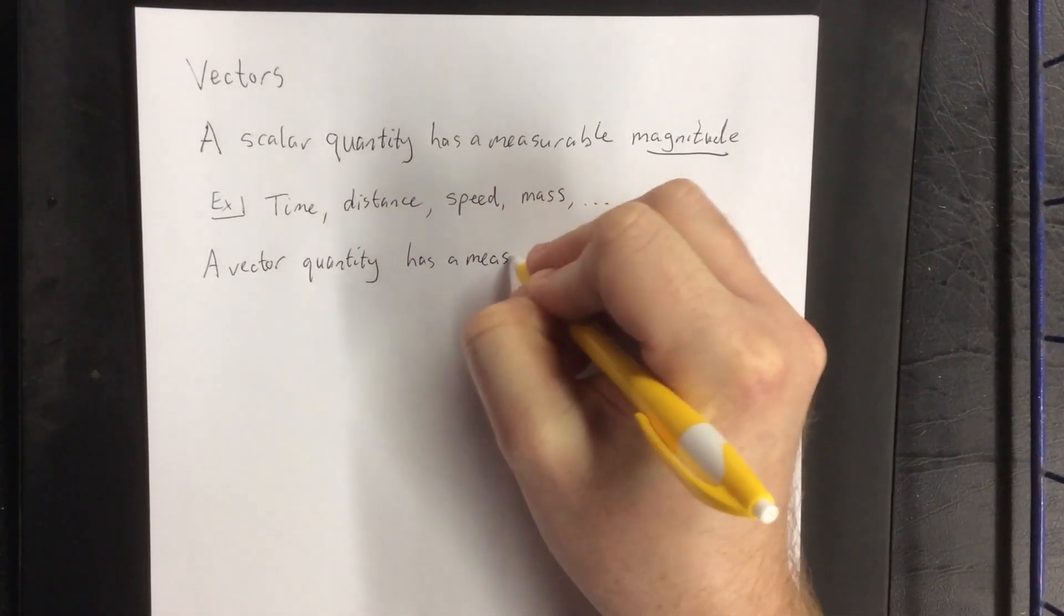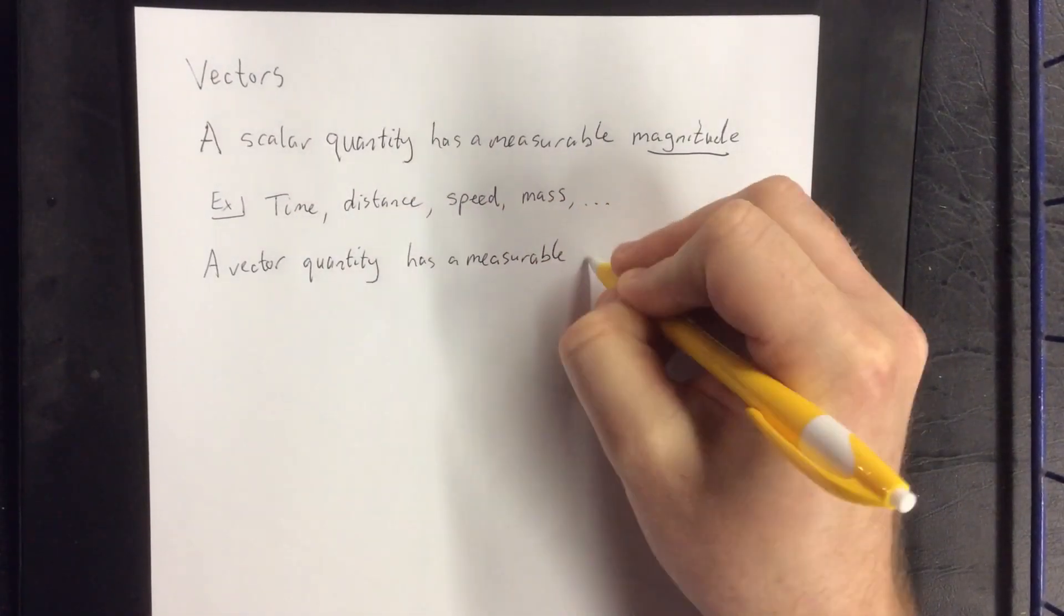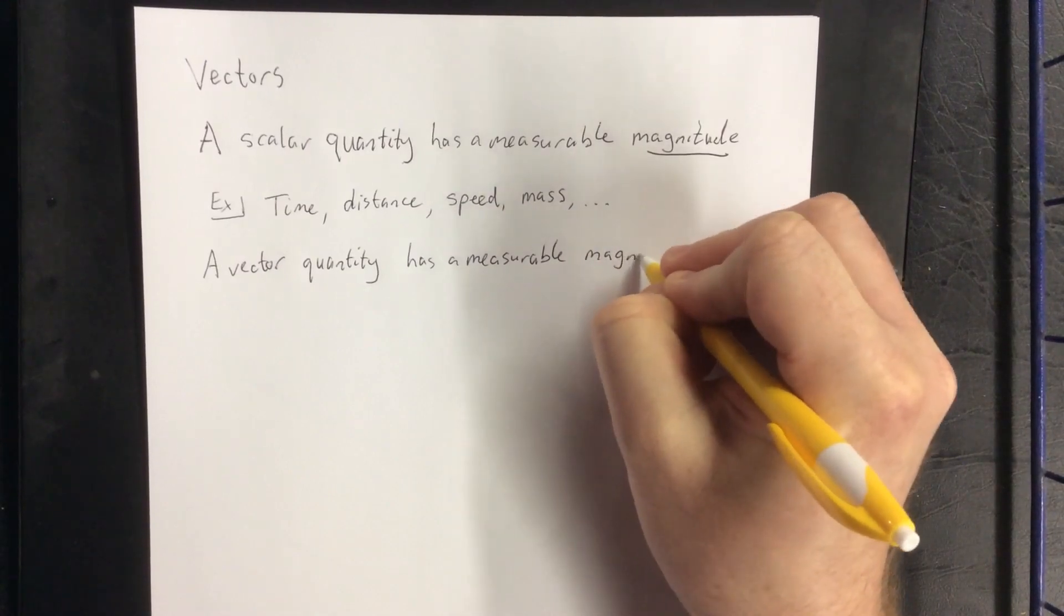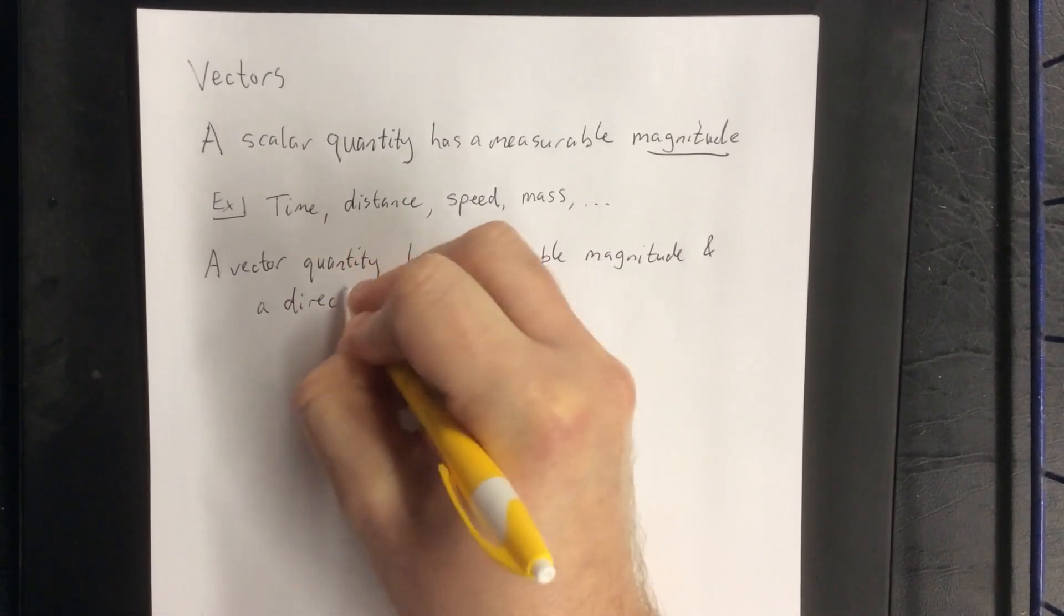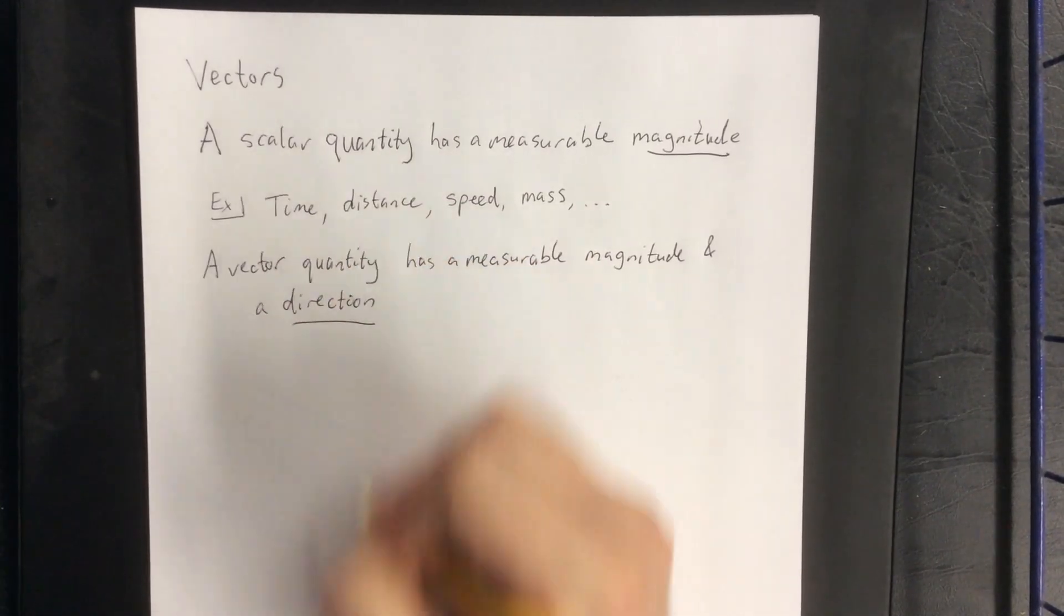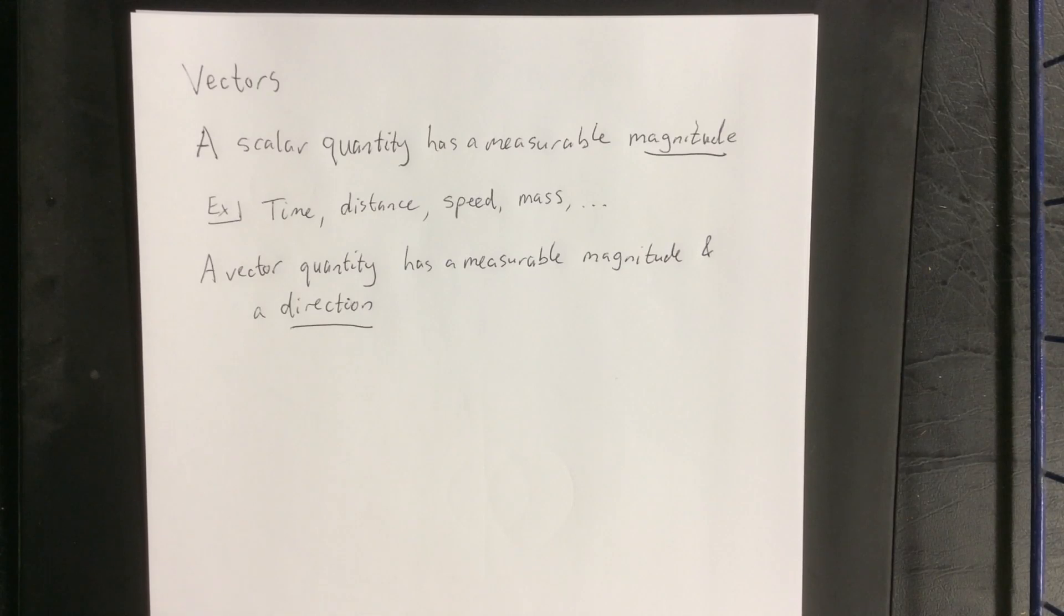A measurable magnitude, and as soon as we attach a direction to that magnitude, you're now dealing with a vector quantity.